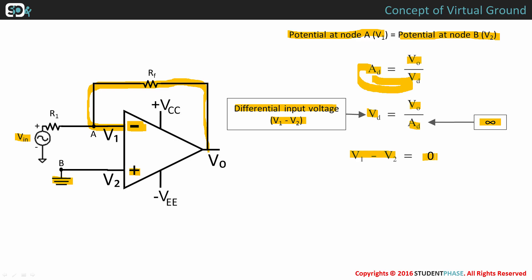Therefore we can say that potential at node A, which is V1, is equal to the potential at node B, which is V2.